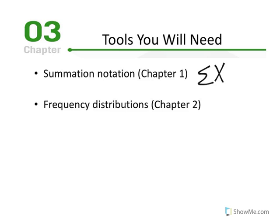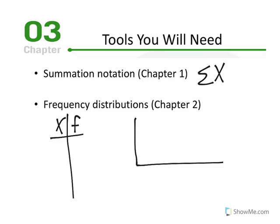We also review frequency distributions — frequency tables where X values are listed from high to low with how often each value occurred, or a graph where the ordinate displays the frequency and the abscissa displays our X values. Every chapter builds on the previous skill, so it's important to master the material before moving on to the next chapter.